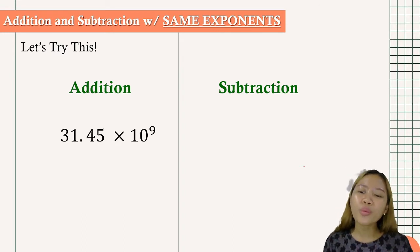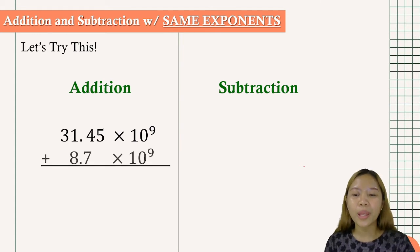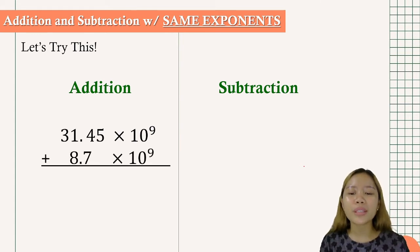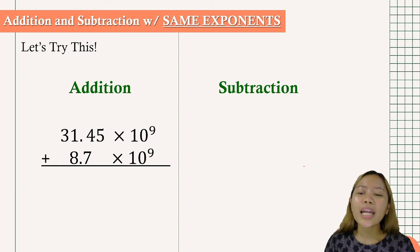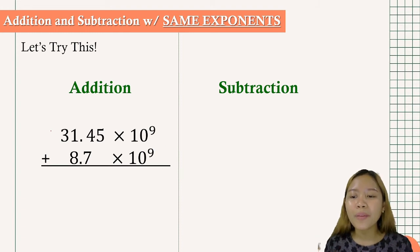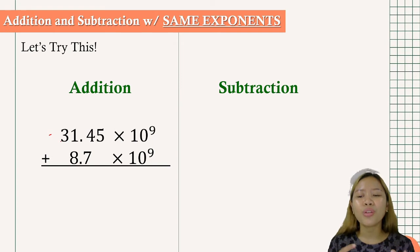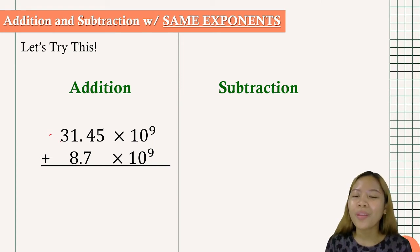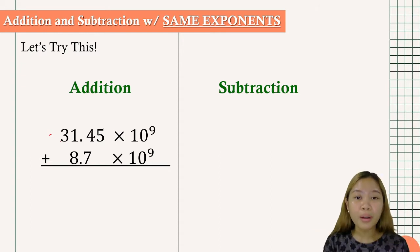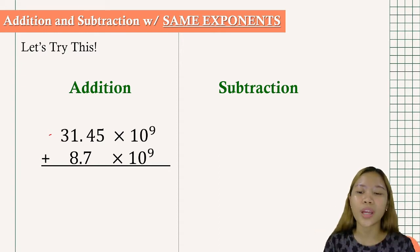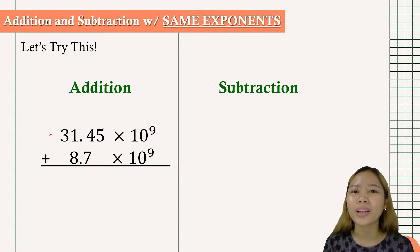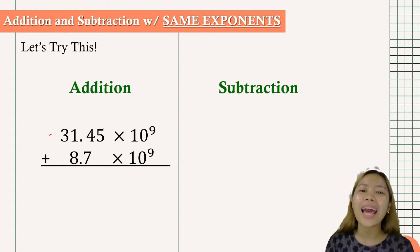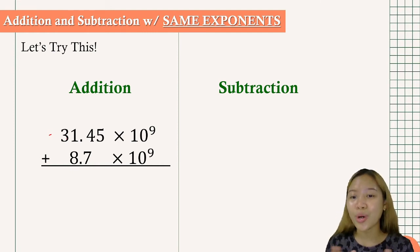We have 31.45 times 10 to the 9th plus 8.7 times 10 to the 9th. As mentioned in the previous video, scientific notation should have only one whole number digit. However, during operations we may work with non-standard forms temporarily, depending on the problem. But for the final answer, we need only one whole number digit — it cannot exceed 9.